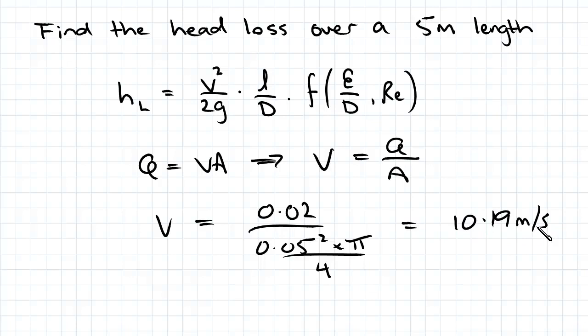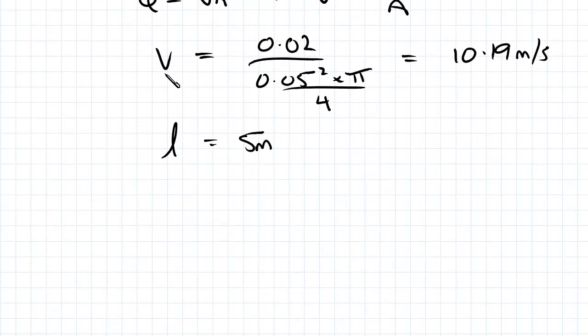For length, we were told to set it at 5 meters from the question, so L equals 5. D we just said was 0.05 meters, that was also from the question. Re we can find from the velocity we found.